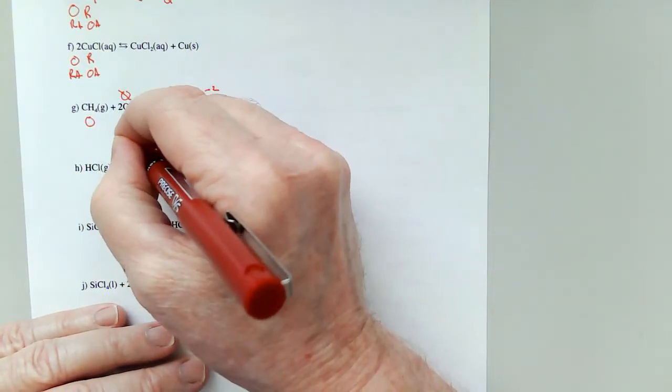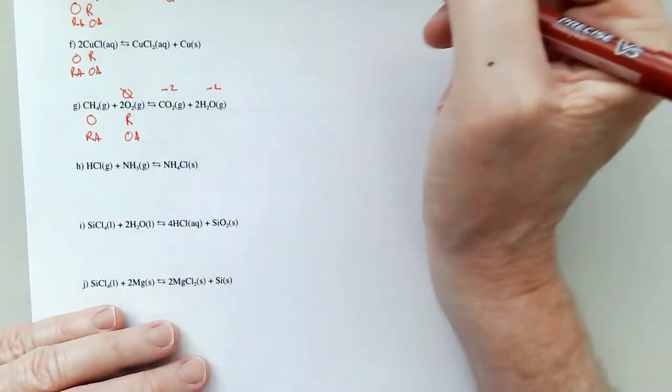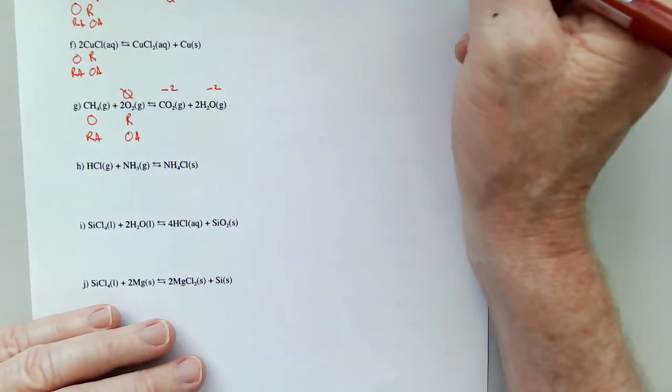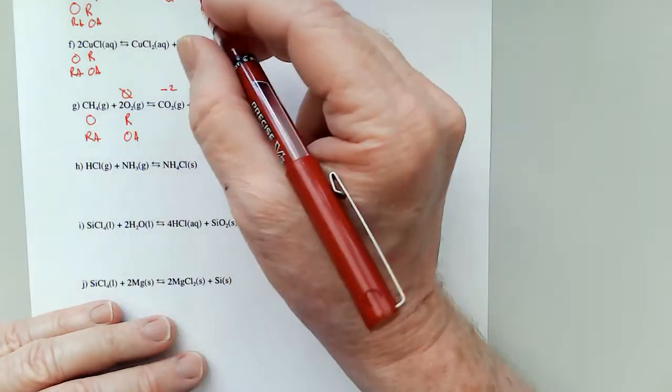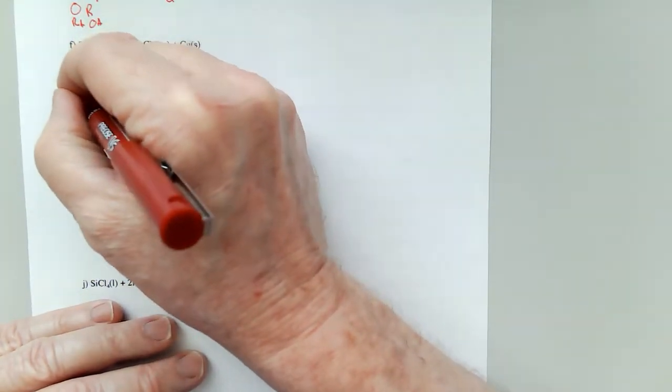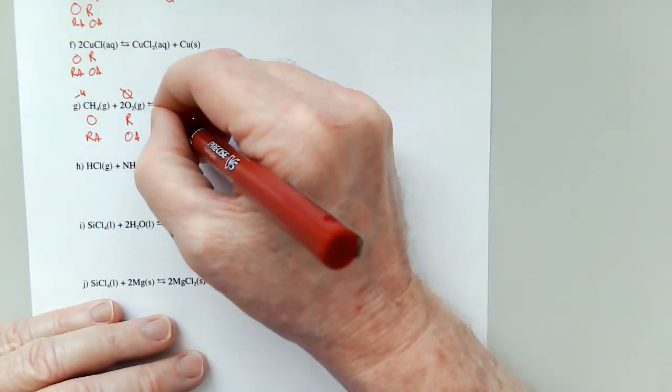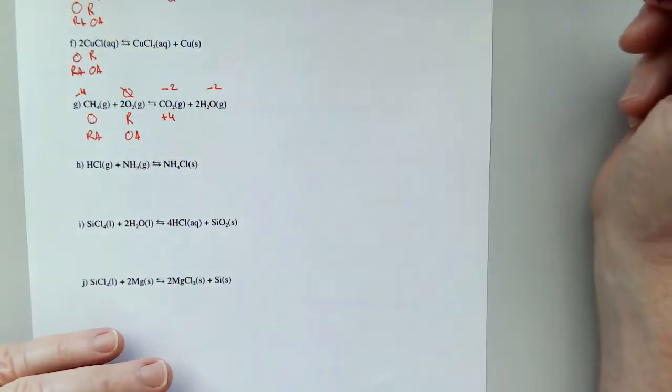Because here, the carbon is a negative four, and here, the carbon is a positive four. It lost a lot of electrons.